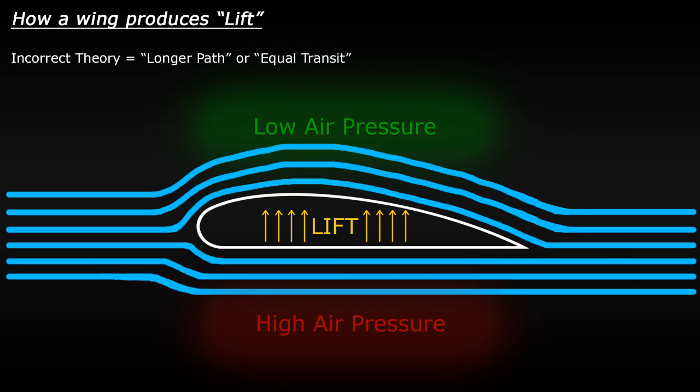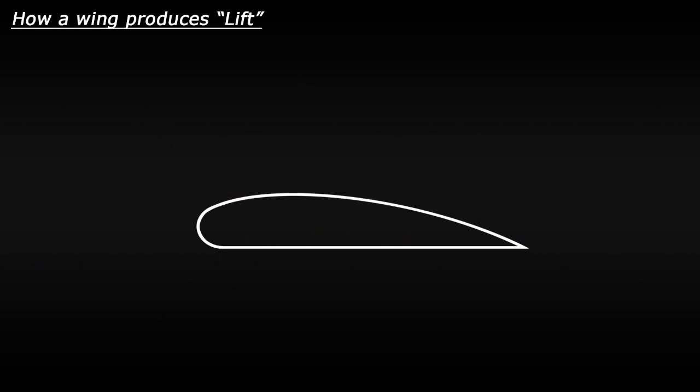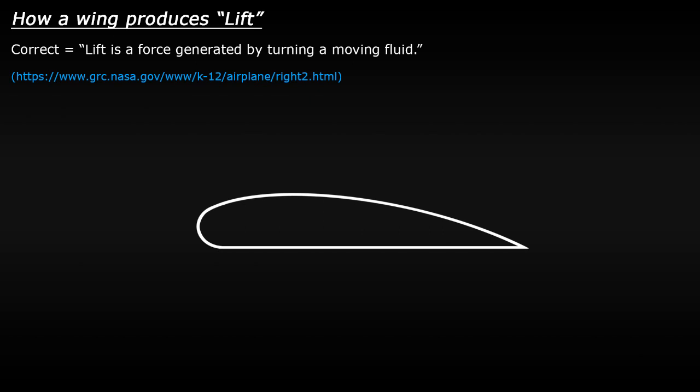Now, there are a few aspects of this theory which are correct, but it doesn't tell the full story. So I'm going to give you the correct answer first and then try and explain what's going on after. So the correct answer is that lift is created because a wing or an aerofoil is turning the airflow and directing it downwards. It's not a pressure difference which creates lift.